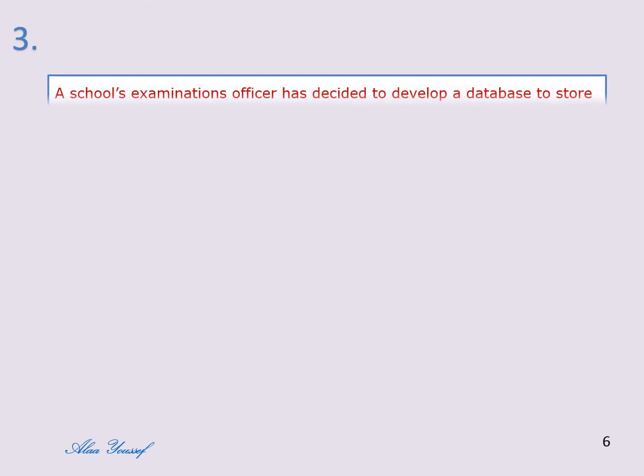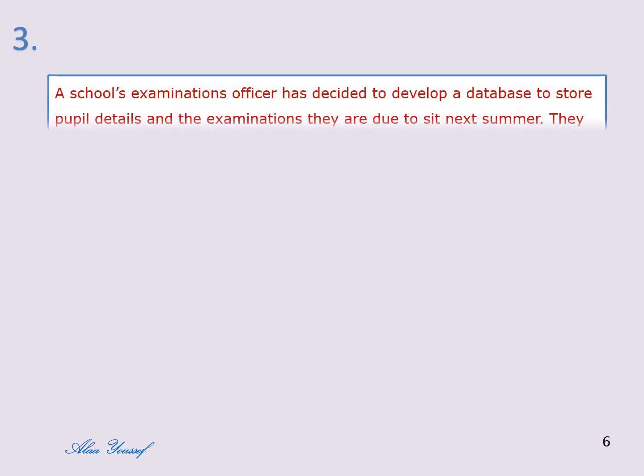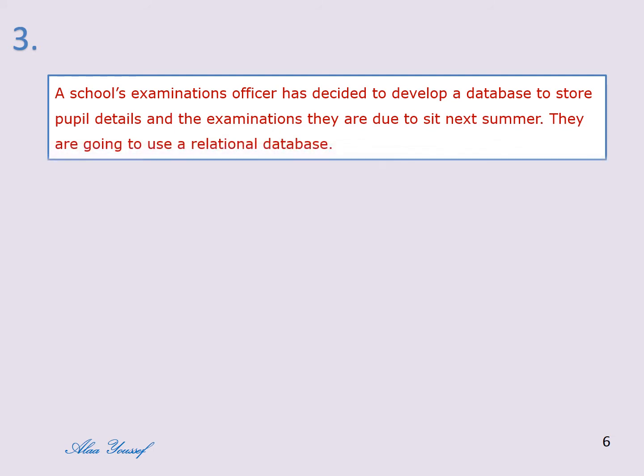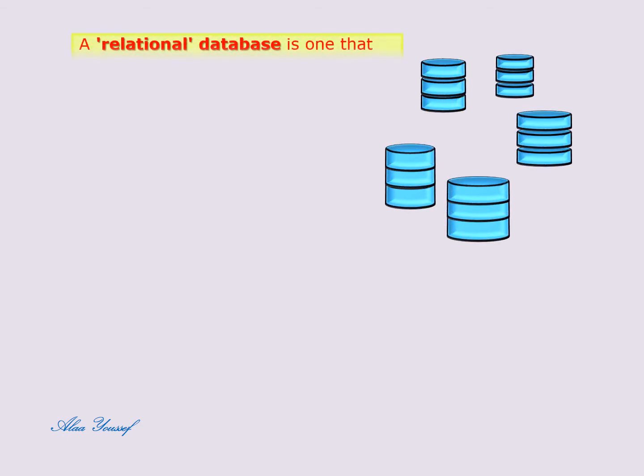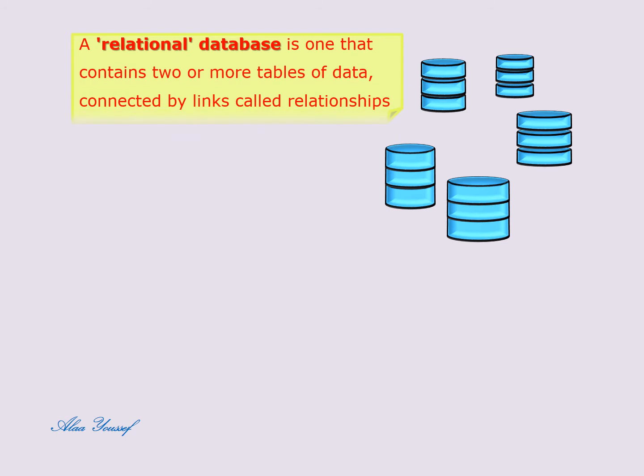Question number three: a school's examination officer has decided to develop a database to store pupil details and the examinations they are due to sit next summer. They are going to use a relational database. A) Describe the steps involved in creating the database. First, let's recall that a relational database contains two or more tables connected by links called relationships.